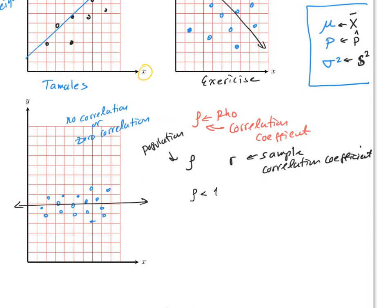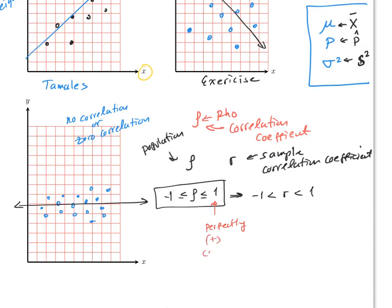The correlation always has to be between minus one and one. If r equals one, that is perfectly positively correlated; if r equals minus one, that is perfectly negatively correlated. Since r is an approximation, it can never truly equal exactly one or negative one in practice.